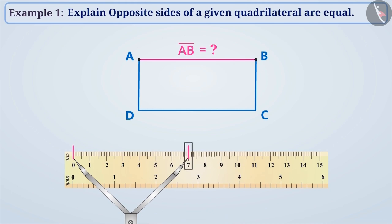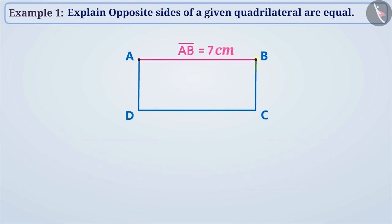Since we have used symbols marked in centimeters for measurement, the length of the line segment AB is 7 centimeters. Using the same method, we know BC is equal to 3 centimeters, CD is equal to 7 centimeters, and DA is equal to 3 centimeters.